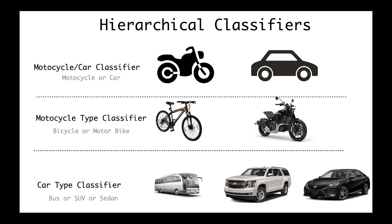Here we have only three major categories, so we have three classifiers. But in the case of a deeper hierarchy we will have more classifiers to build, and this might end up being not very practical. Imagine that you have ten categories — in that case you need to build ten classifiers, and if you have more you will have to build even more.